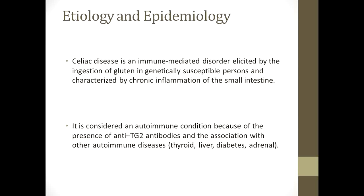Celiac disease is an immune-mediated disorder elicited by the ingestion of gluten in genetically susceptible persons, characterized by chronic inflammation of the small intestine. It is considered an autoimmune condition because of the presence of anti-tissue transglutaminase antibodies and its association with other autoimmune diseases of the thyroid, liver, diabetes, and adrenal.